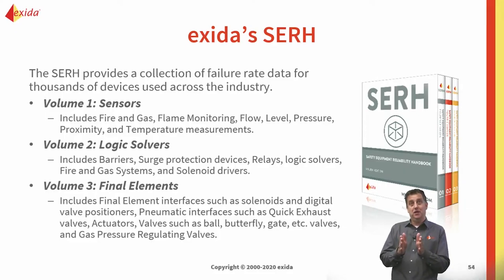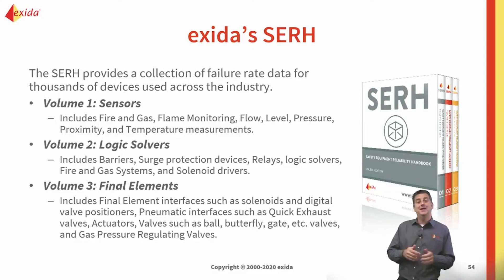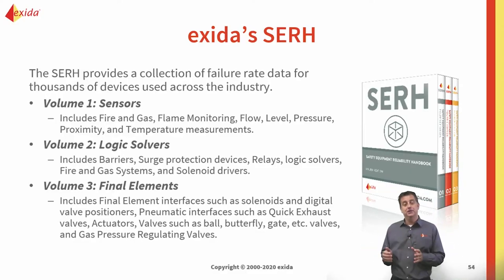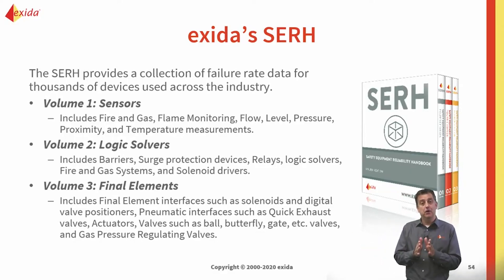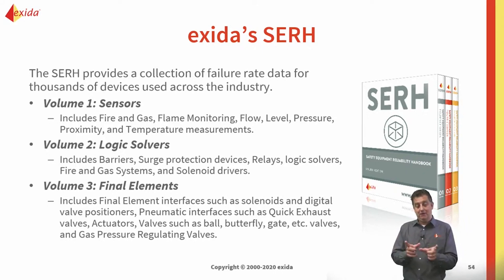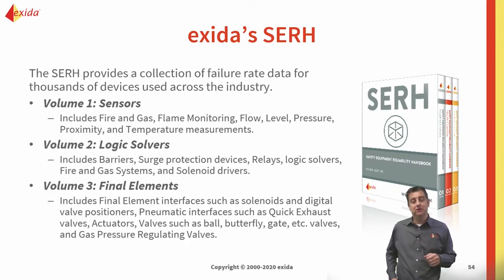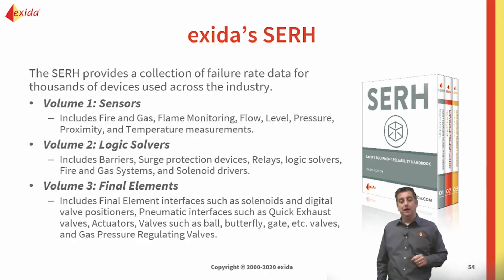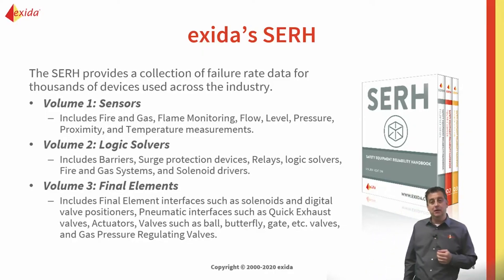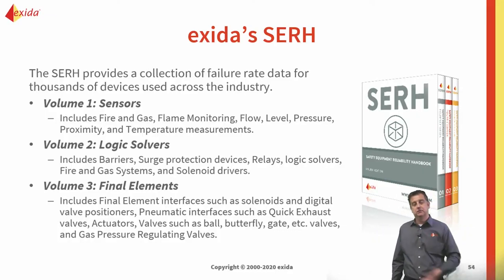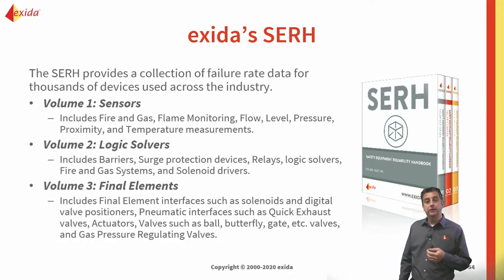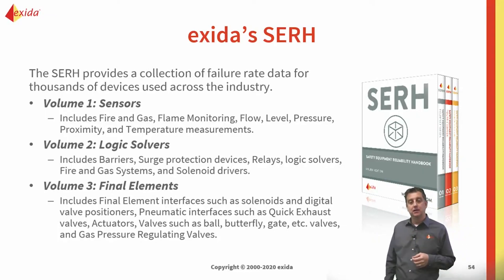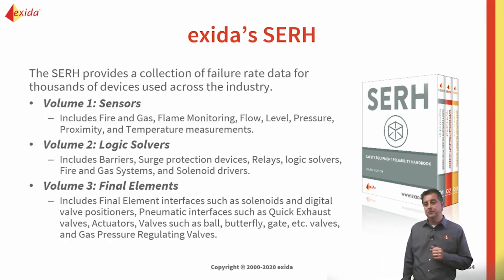The third edition was almost a thousand pages in three separate volumes. The fourth edition — just the final element book alone — was about a thousand pages. So we now have roughly six inches of data in our tool, which we continuously update and continuously add new items to.